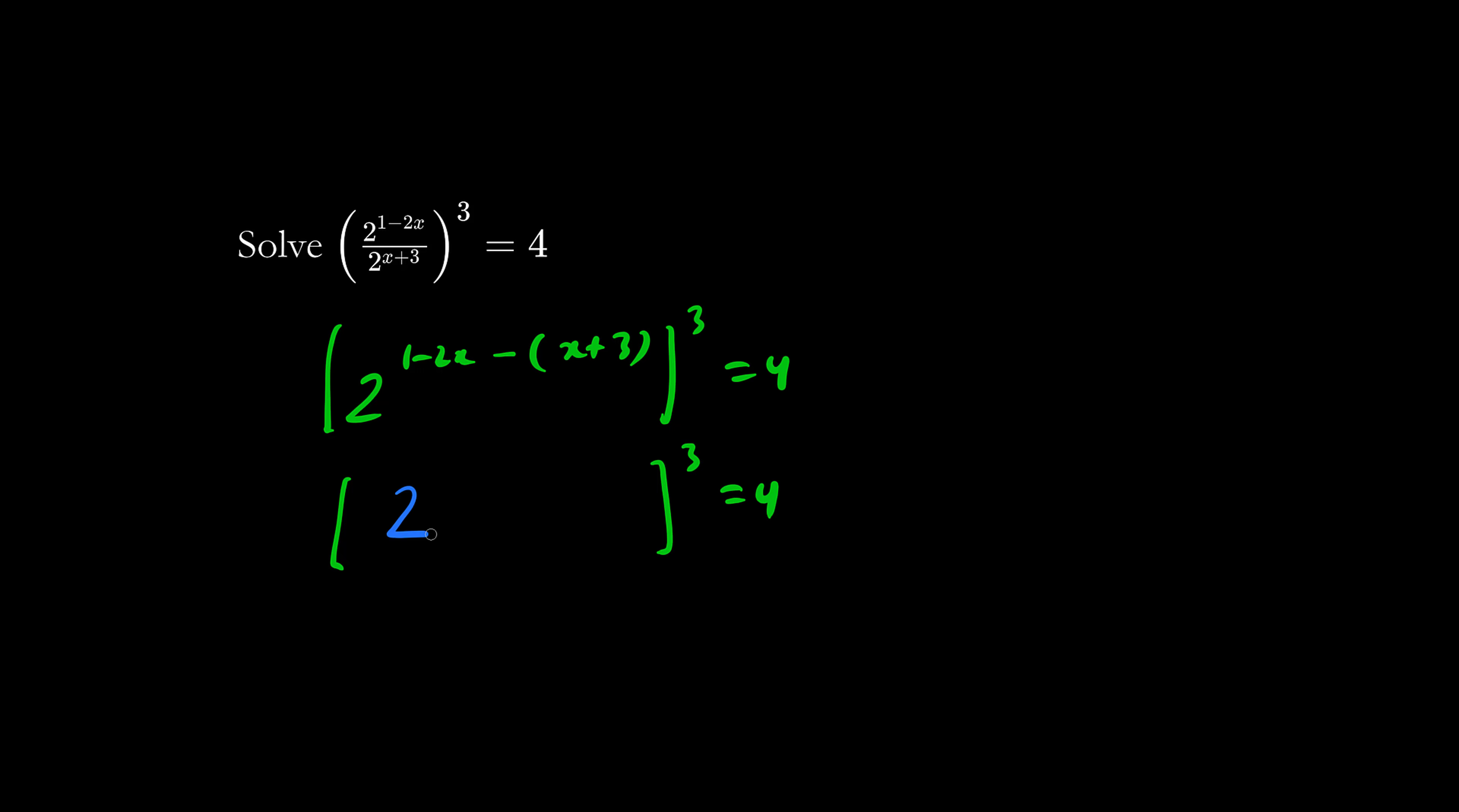So we have base 2, negative 2x minus x is negative 3x, 1 minus 3 is minus 2. And we're going to multiply this with 3. So we have 2 to the negative 9x minus 6 equals 2 squared which is 4.